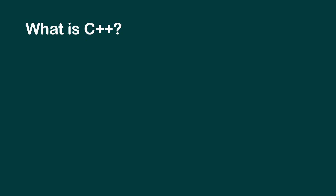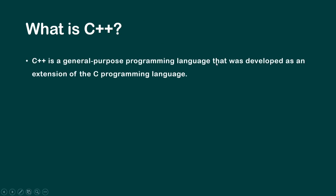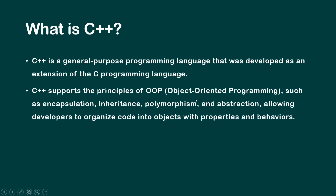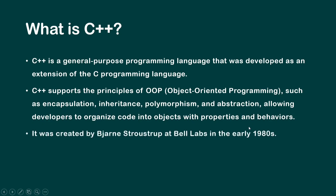Let's get started. What is C++? Before learning anything we have to get a little bit of knowledge about it. C++ is a general purpose programming language that was developed as an extension of the C programming language. C++ supports the principles of object-oriented programming such as encapsulation, inheritance, polymorphism, and abstraction, allowing developers to organize code into objects with properties and behaviors.